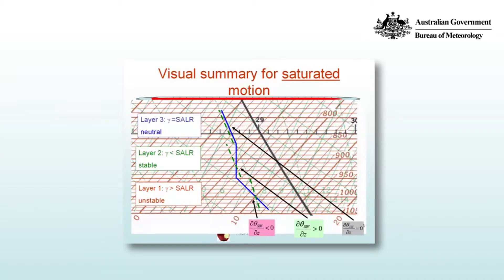You can then compare each of these layers to the lapse rate of the pseudo-wet bulb potential temperature. For example, in the first layer the pseudo-wet bulb potential temperature decreases with height — the temperature trace cuts across decreasing values of saturated adiabats — so it's an unstable layer. In the second layer, the pseudo-wet bulb potential temperature at the bottom is less than at the top, so dθSW/dZ is greater than zero, which is associated with stability. In the third layer, the value of θSW is the same at the bottom and top, so that's neutral stability.